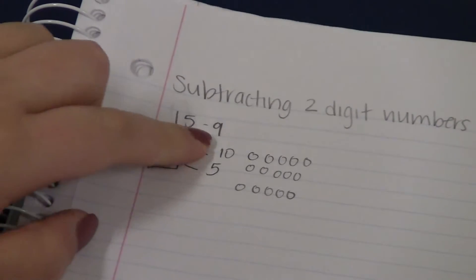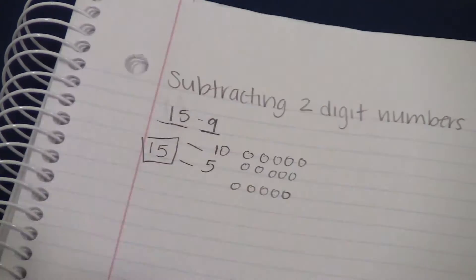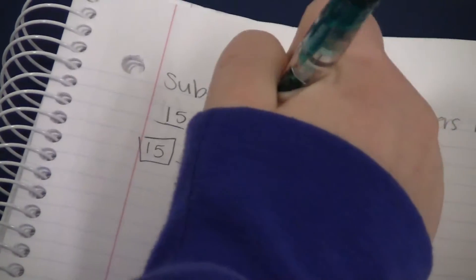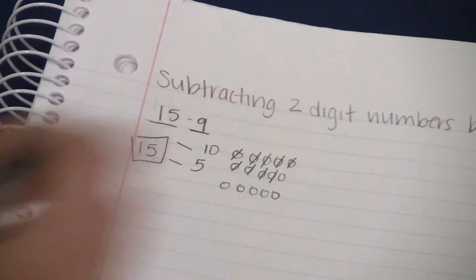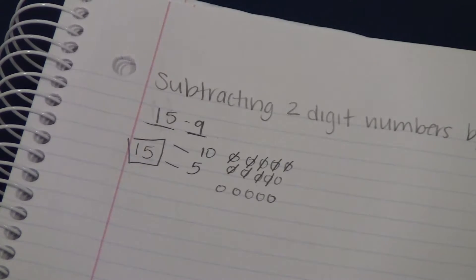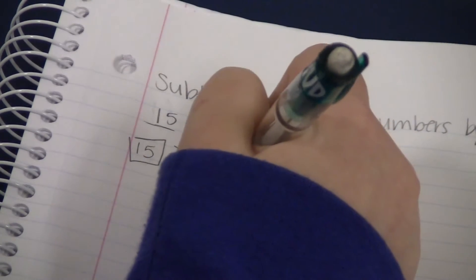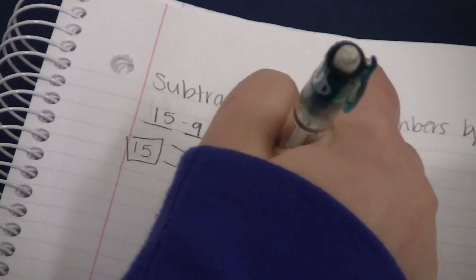Our next step is to subtract by 9. So we're going to mark out 9 of the circles. And then also an important thing to do is to color in these right here, so you don't count them.